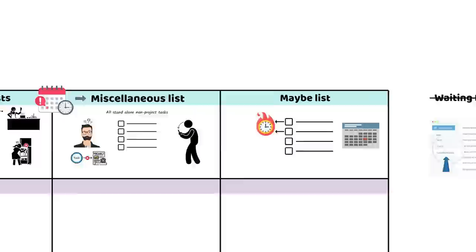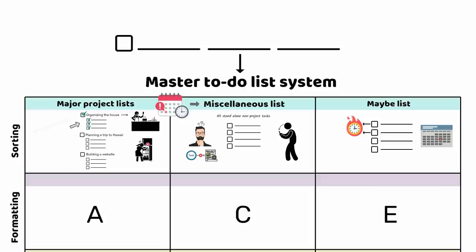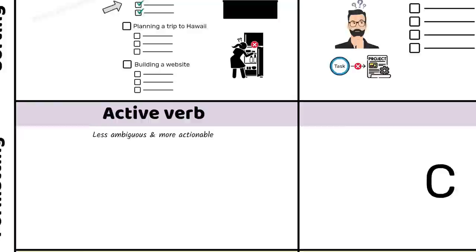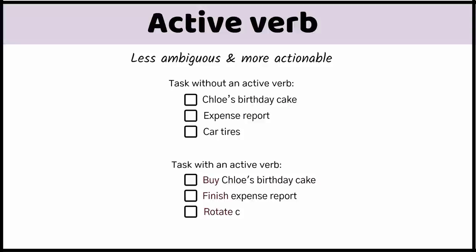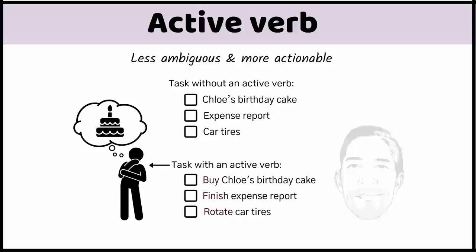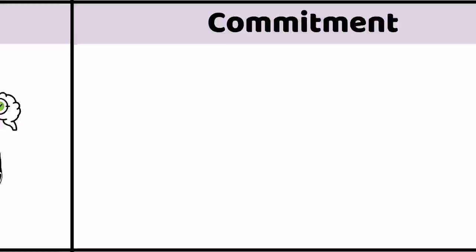Now let's cover the ACE formatting acronym. Every task you put in your master to-do list system must have the same three-part structure: active verb, bracket commitment, dash expected result. Starting every task with an active verb makes your to-do lists less ambiguous and more actionable. Just compare 'Chloe's birthday cake, expense report, car tires' with 'buy Chloe's birthday cake, finish expense report, rotate car tires.' The second to-do list is simply easier to imagine and seemingly easier to do. Damon Zaharias says the verb triggers something in the brain, prompting it to focus on completing the item.